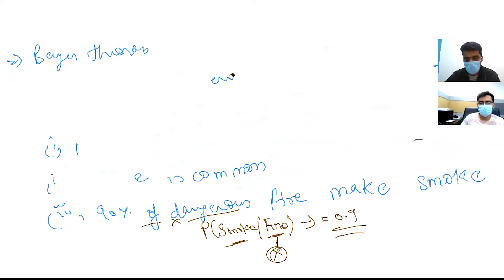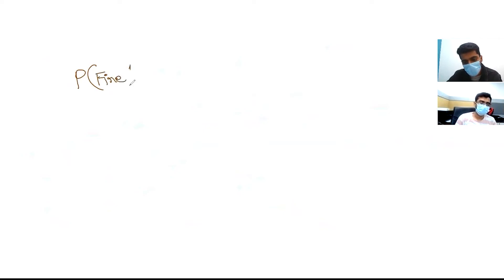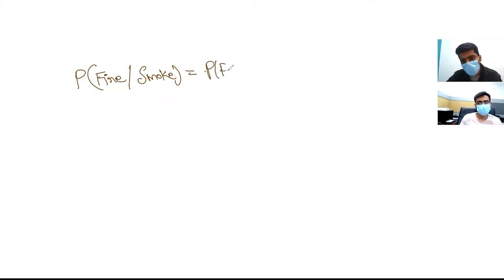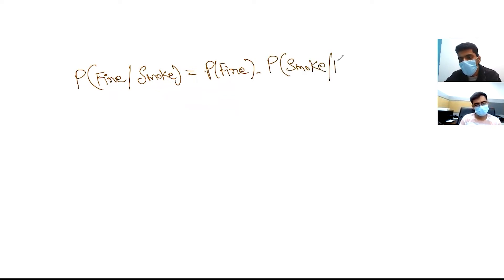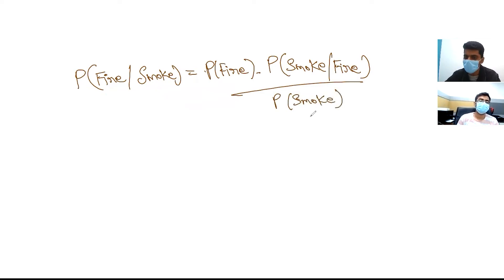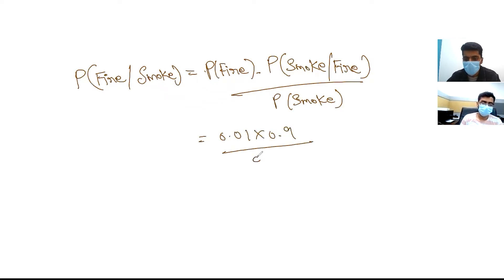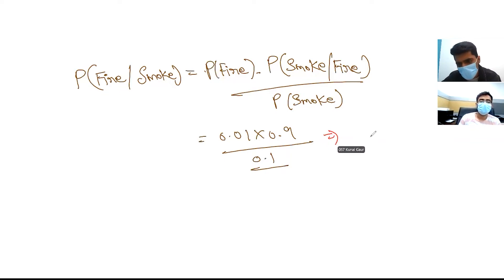Applying Bayes' theorem: P(fire | smoke) = P(fire) × P(smoke | fire) / P(smoke) = 0.01 × 0.9 / 0.1. This gives us 0.09. Interviewer: Correct. Well done.